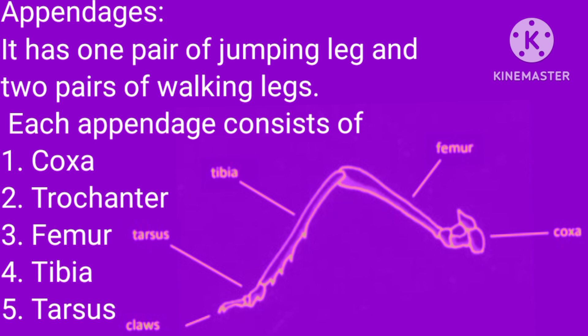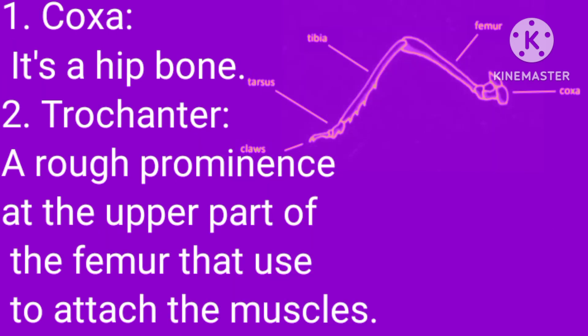The cricket has one pair of jumping legs and two pairs of walking legs. Each appendage consists of coxa, trochanter, femur, tibia, and tarsus.